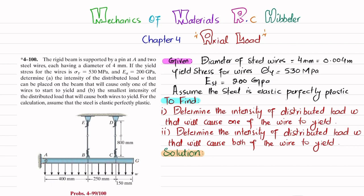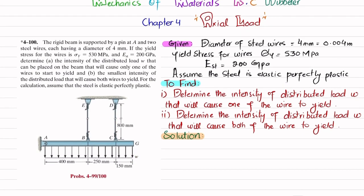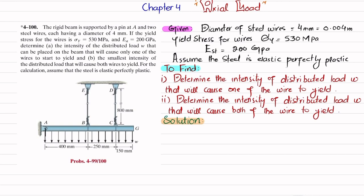You can see the beam: there is a pin support at point A, and at points B and C there are two steel wires of diameter 4 mm, with a distributed load w acting over the whole length. If you remove the pin support at point A, there will be a vertical reaction force RAy and a horizontal reaction force RAx.